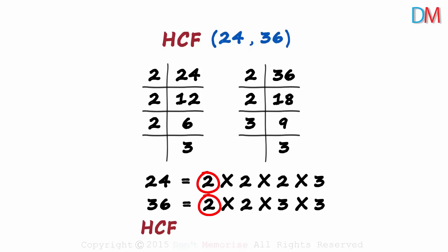2 is a common prime factor to both the numbers, so we write a 2 once. There is another 2 that is common to both, so we multiply this 2 with another 2. And there is a 3 which is common to both the numbers as well. Hence we multiply this product with 3.